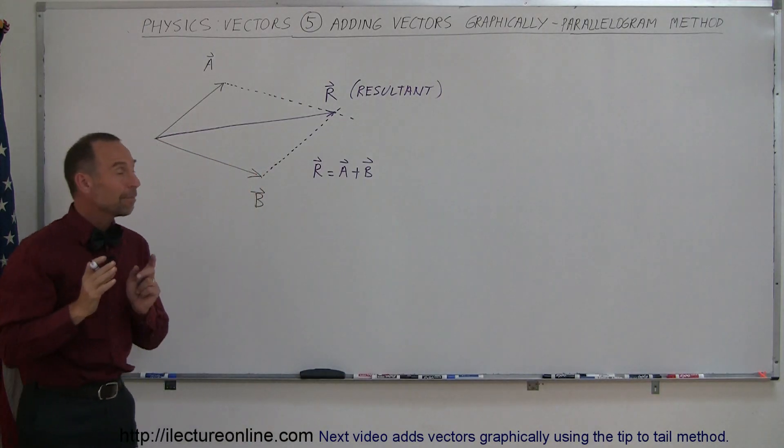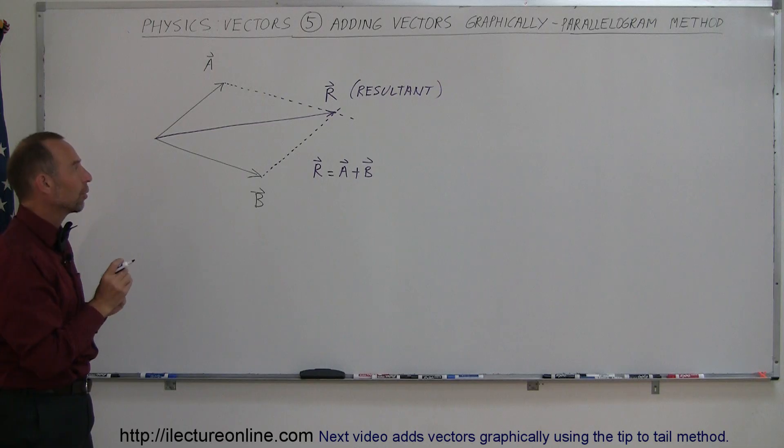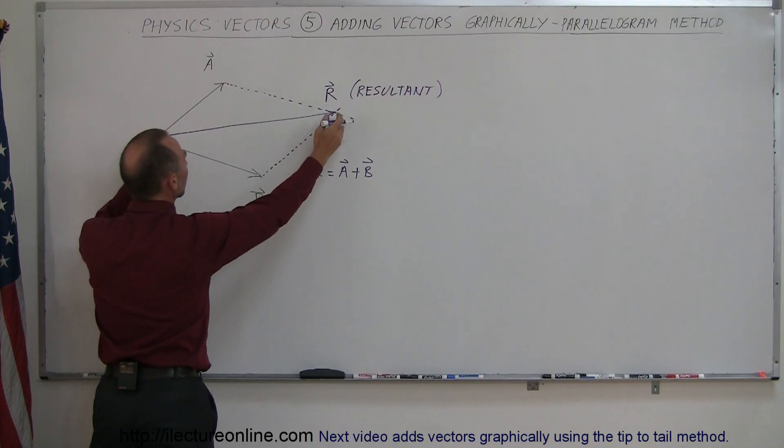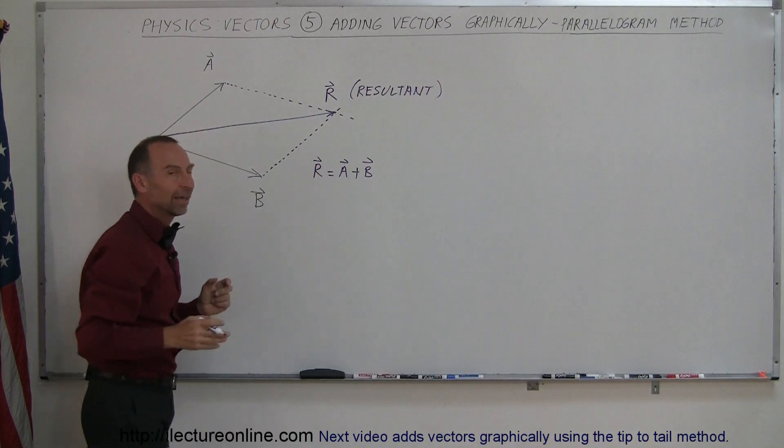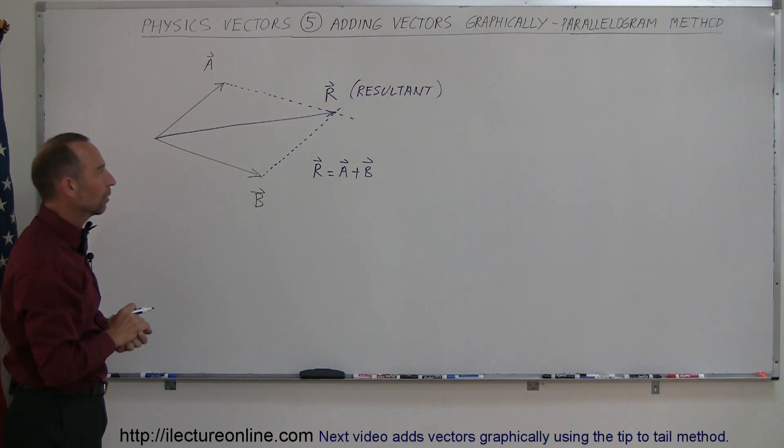Notice, I did not take the magnitude of A and add it to the magnitude of B because the direction is important. So to get the proper magnitude of the resultant, you have to draw it graphically like this. Now you can go with a ruler and measure what that length is in relation to A and B, and that gives you the magnitude of R, the resultant.